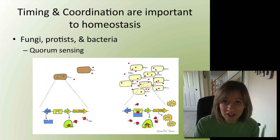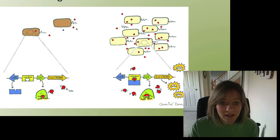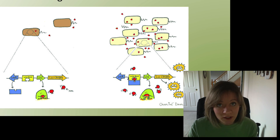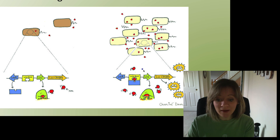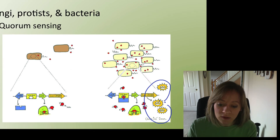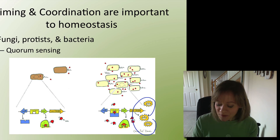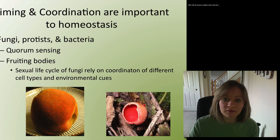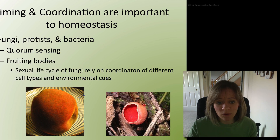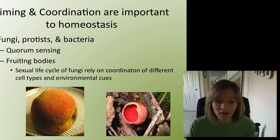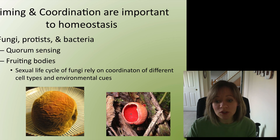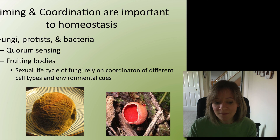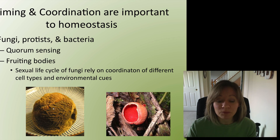Same with bacteria — timing and coordination. All the bacteria have to be in the same place, releasing the same chemical, which is then taken up by the bacteria, and that signal is going to be released to produce some sort of light or signal — in this case, luminescence. Same thing with fungi: fungi have a very complex sexual and asexual life cycle that relies on multiple cell types and timing with the environment. When everything is right, they release these spores, also called fruiting bodies — that's actually what you're looking at when you see molding bread or molding fruit.